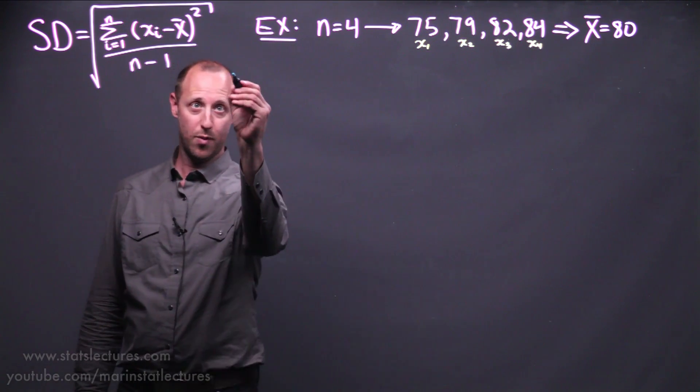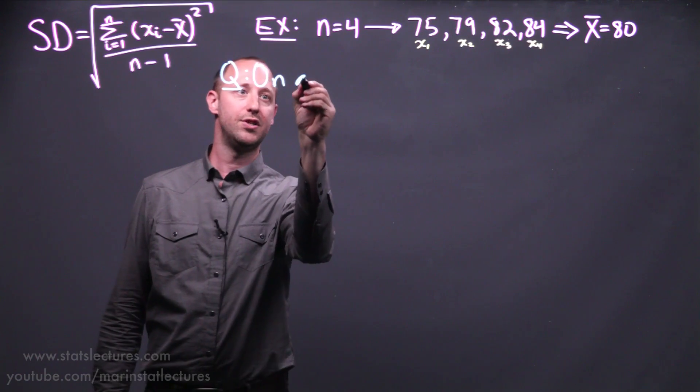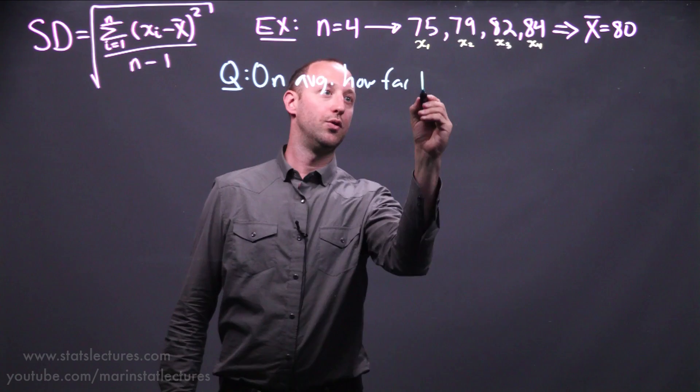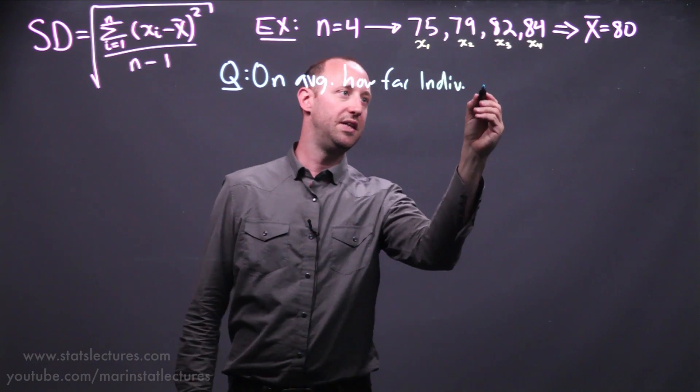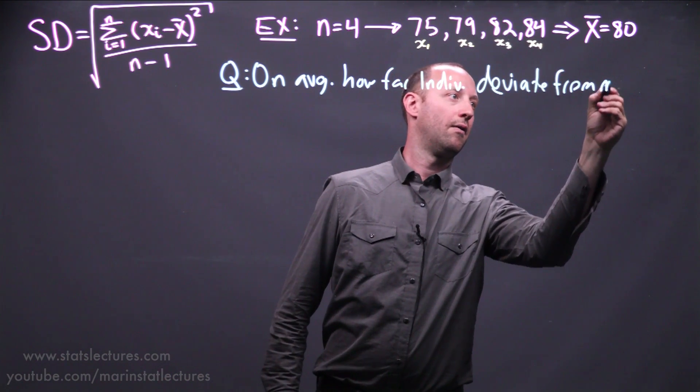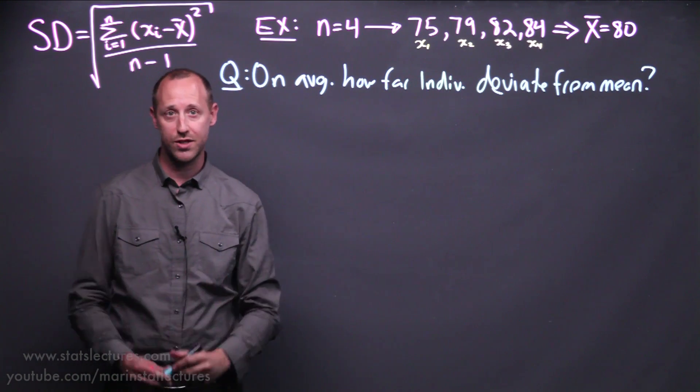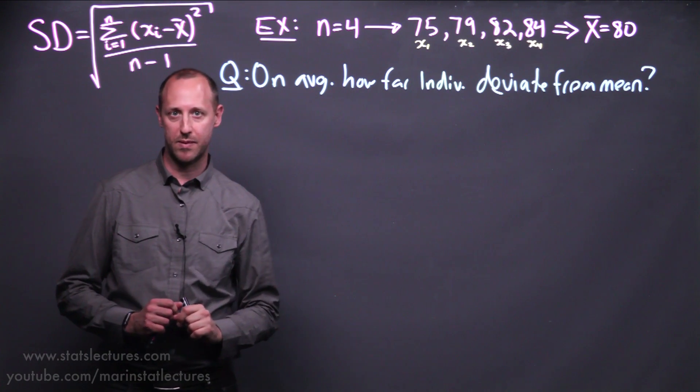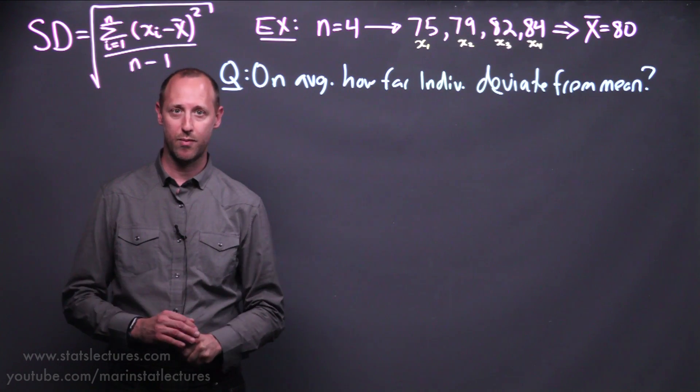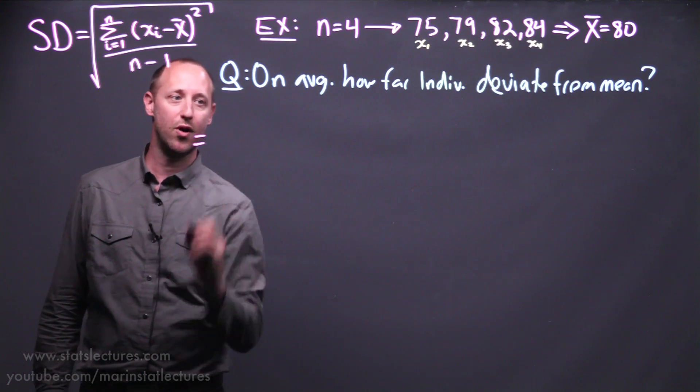Now I'm going to ask you to think up your own formula that helps us capture the following. We want to know on average how far do individual observations deviate from the mean. On average how far is an individual moving from the mean. So I suggest you take a moment, pause this video and think about it and try and develop a formula for yourself. Chances are that as you thought about this many of you will have come up with the following formula.